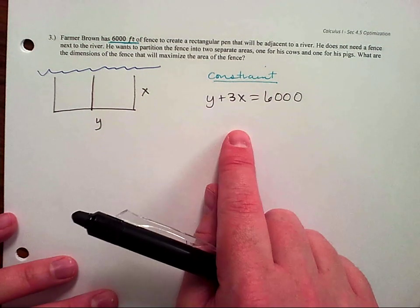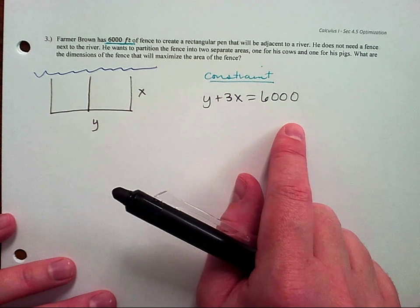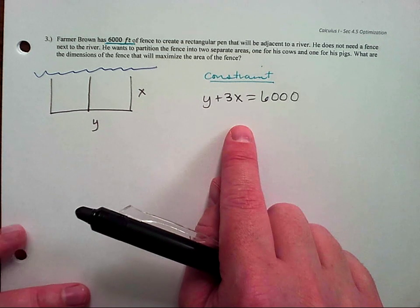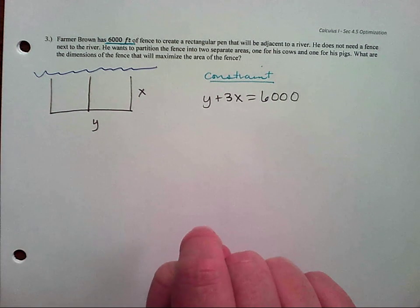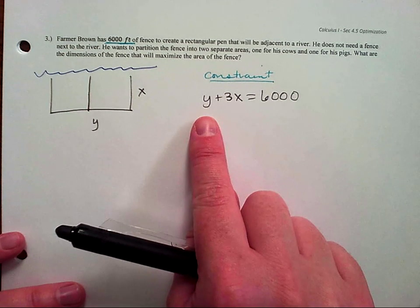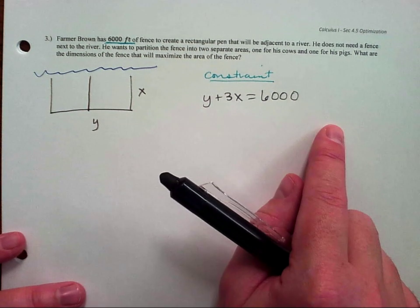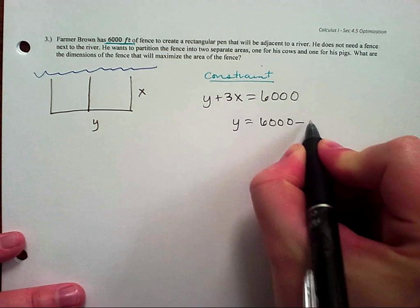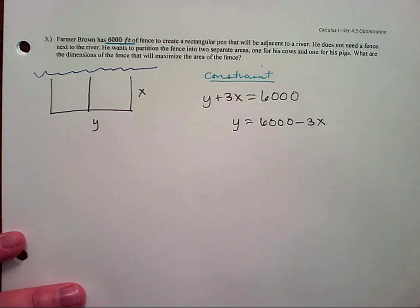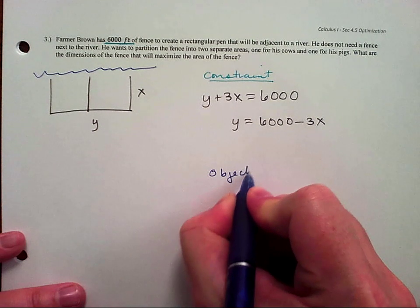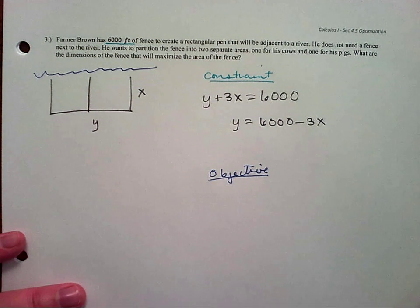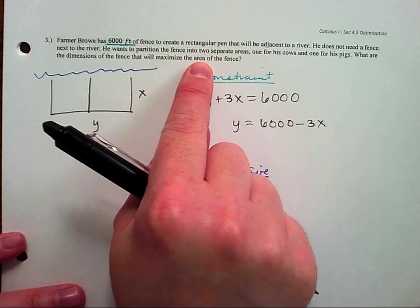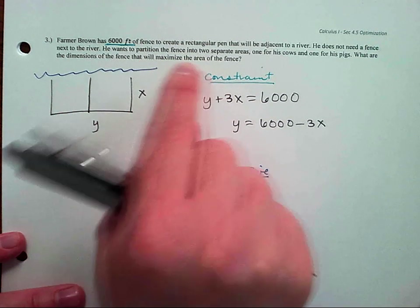We wrote down our constraint equation — that's the one that equals a number. Now we need to identify the objective equation. Reading the last sentence: what are the dimensions of the fence that will maximize area? So I need to maximize the area. That's what I'm trying to optimize.